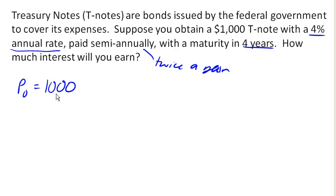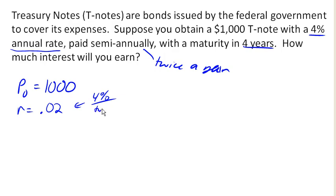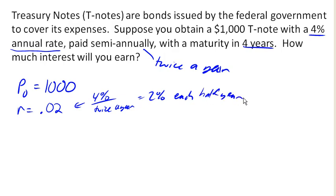The interest rate is 4% as an annual rate, but if we're going to convert that to match our time interval, we need to say that it is 0.02, or in other words 2%. That's 4% divided by twice a year, which gives me 2% each semi-annual time period — each half year. So our time interval is going to be 8 half years.